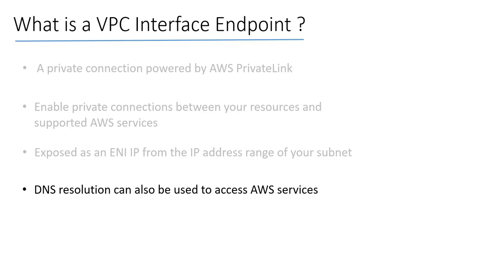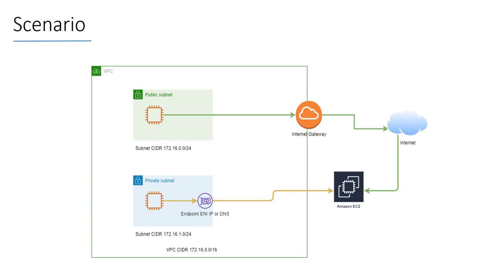Here is our scenario — I have created a simplified schema. We have a VPC with two subnets. The first is a public subnet hosting EC2 instances that need to be reachable from the internet. The second is a private subnet. The instance on the public subnet connects through the internet, whereas the instance on the private subnet uses the VPC interface endpoint and avoids using the internet.